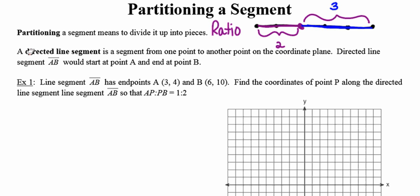A directed line segment sounds like a complicated concept but really isn't. A directed line segment has a starting endpoint and an ending endpoint. For instance, directed line segment AB is going to have point A as a starting point and point B as an ending point. That's all it means to be a directed line segment.